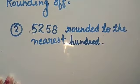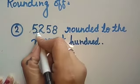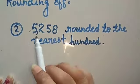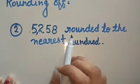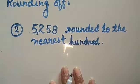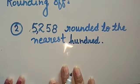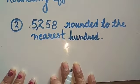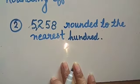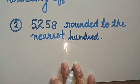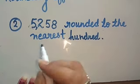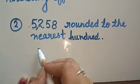Next question: 5258 rounded to the nearest hundred. First of all, we will check and identify the place to be rounded off. The place is the hundreds place.